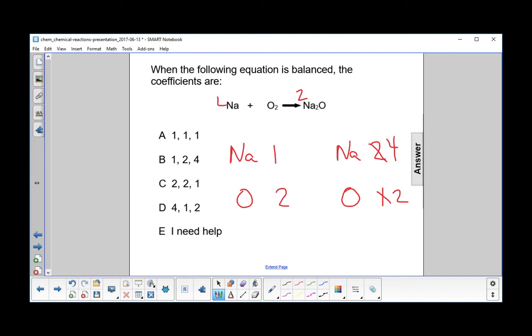What if we put a four here? We now have four sodiums. We still have two oxygens on the left, and on the right we have four sodiums and two oxygens. So it looks like we're good.